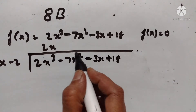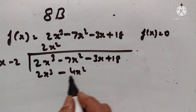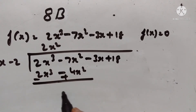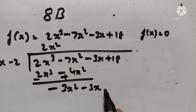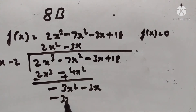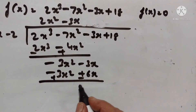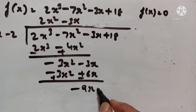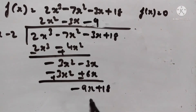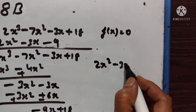Dividing: 2x² gives 2x³ - 4x², leaving -3x² - 3x. Then -3x gives -3x² + 6x, leaving -9x + 18. So -9 gives -9x + 18. The quotient is 2x² - 3x - 9.